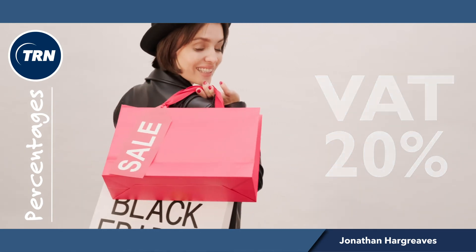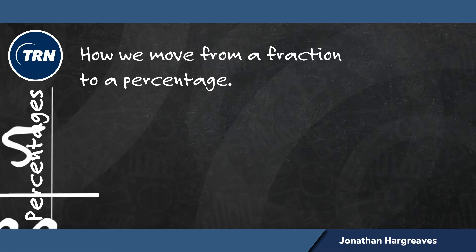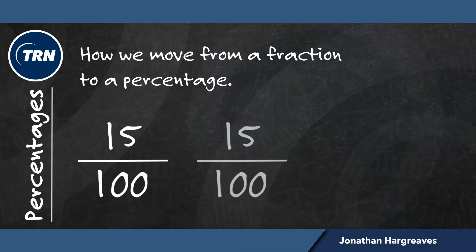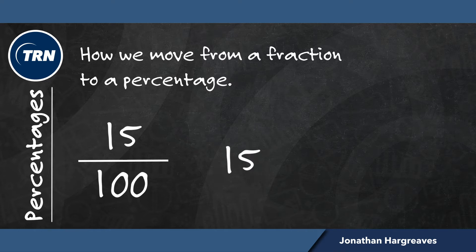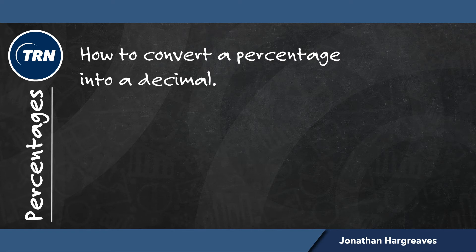So let's have a look at some mathematics and show how we move from a fraction to a percentage. We write 15 over 100. To convert this into a percentage we simply remove our horizontal bar and the 100 and add a percentage sign. Our 15 over 100 now becomes 15%.